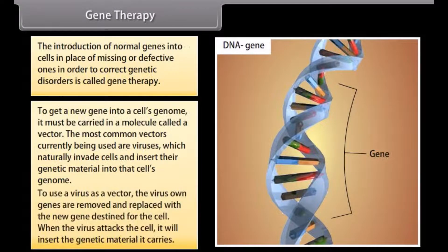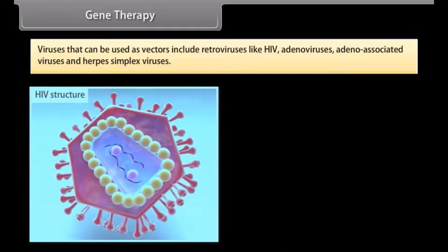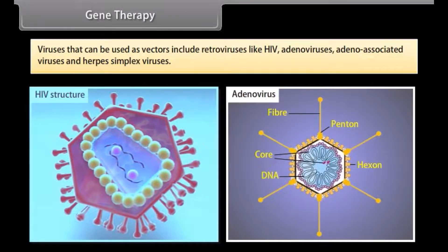To use a virus as a vector, the virus's own genes are removed and replaced with a new gene destined for the cell. When the virus attacks the cell, it will insert the genetic material it carries. A successful transfer results in the target cell carrying the new gene that will correct the problem caused by the faulty gene. Viruses that can be used as vectors include retroviruses like HIV, adenoviruses, adeno-associated viruses, and herpes simplex viruses.